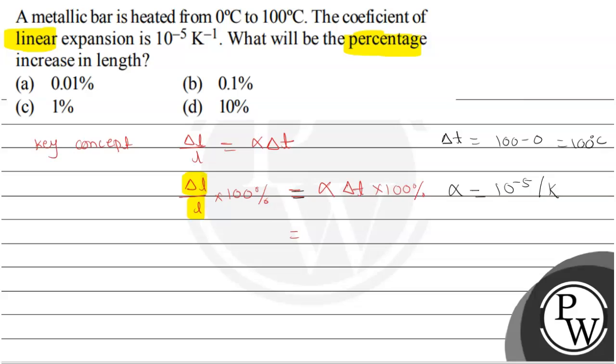Which is equal to 10 raised to minus 5. 10 raised to minus 5 into delta T is 100 degrees Celsius into 100%. For this you got 100, then only you get a percent sign here.